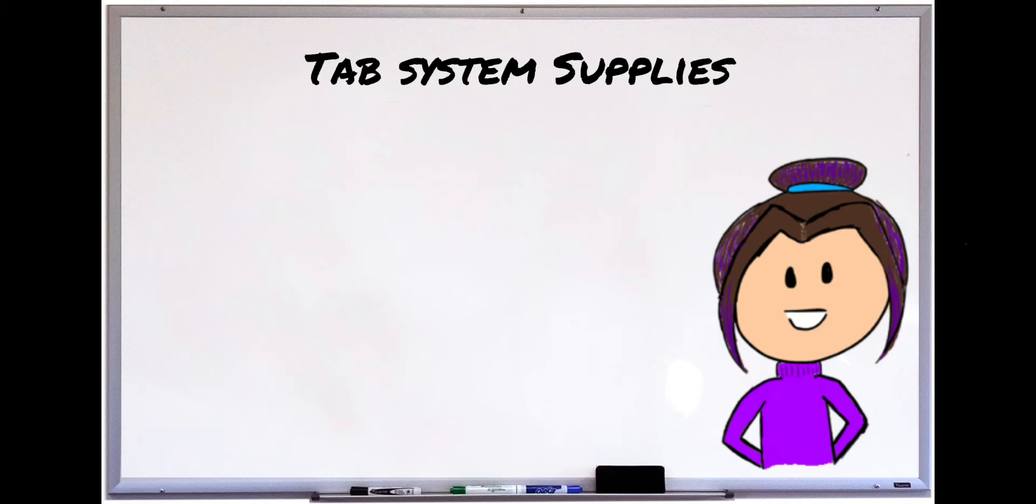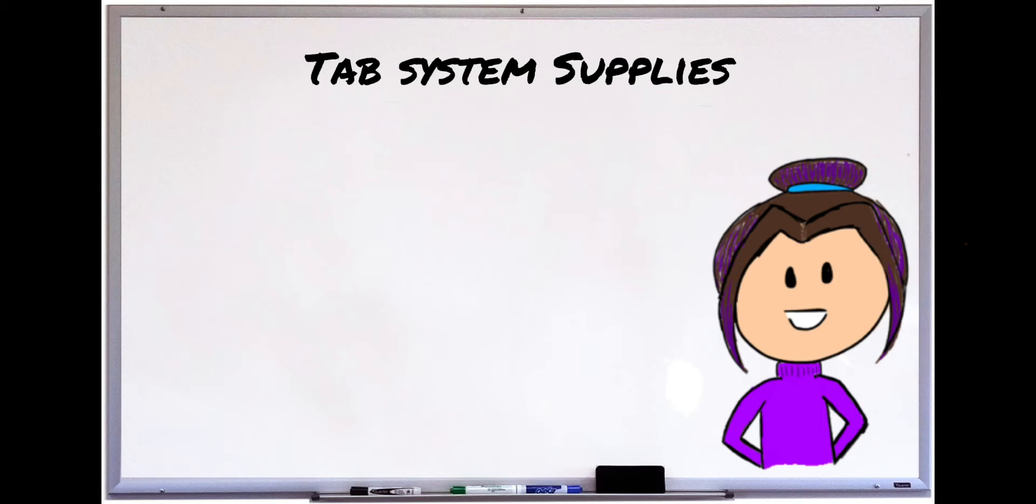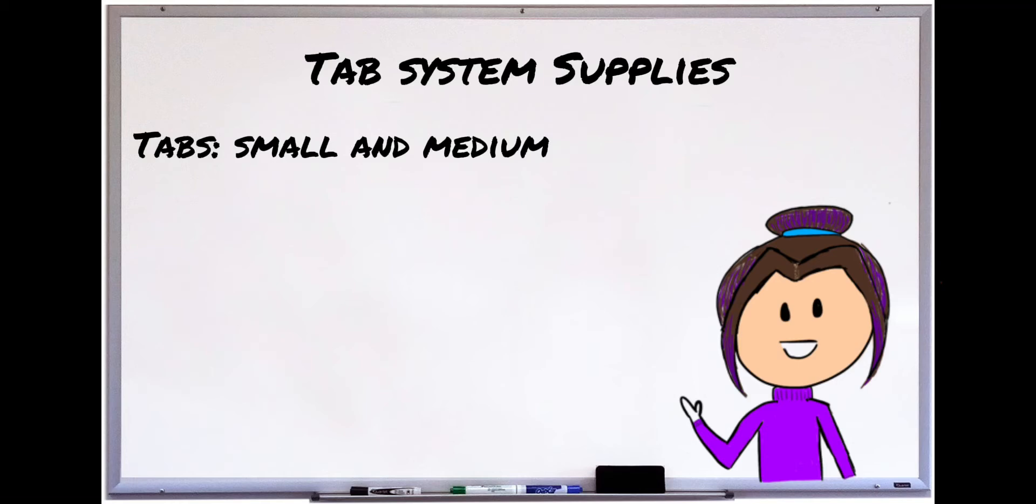All right, so now let's talk about the supplies you'll need for this tabbing system. The most obvious thing you'll need are tabs. These are like the post-it note brands that are plastic, but you can also get some free ones from the university. You'll also need a permanent marker. Any permanent marker will be good.